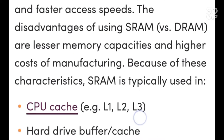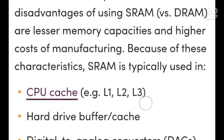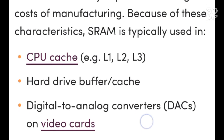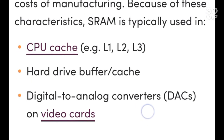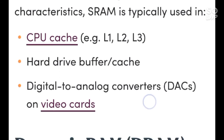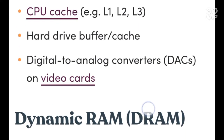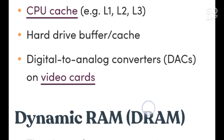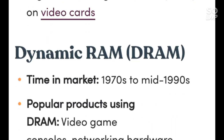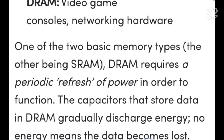No change, action, or refreshing is needed to keep data intact. However, SRAM is volatile memory, which means that all stored data becomes lost once power is cut off. The advantages of SRAM versus DRAM are low power consumption and faster access speed. The disadvantage of SRAM versus DRAM is higher manufacturing cost. Because of these characteristics, SRAM is typically used in CPU cache (L1, L2, L3), hard drive buffer cache, and digital-to-analog converters on video cards.